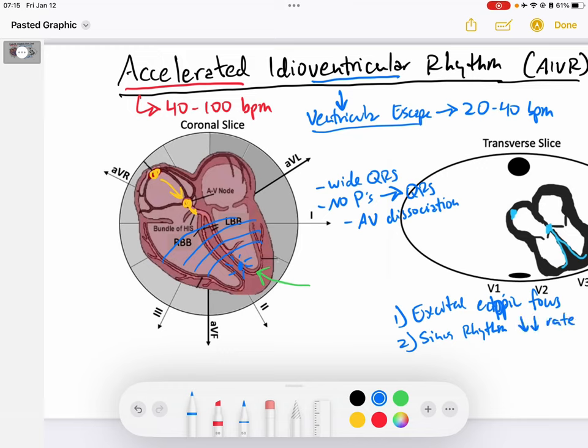If the sinus rhythm, if it decreases in its rate to the point where you have sinus bradycardia at 40 beats per minute, well if that's the case, then maybe this ectopic focus in the ventricle here, it is not being suppressed by normal ventricular depolarization, right?